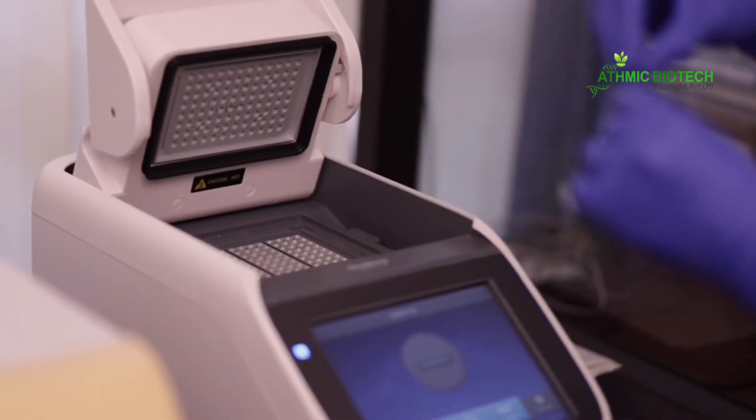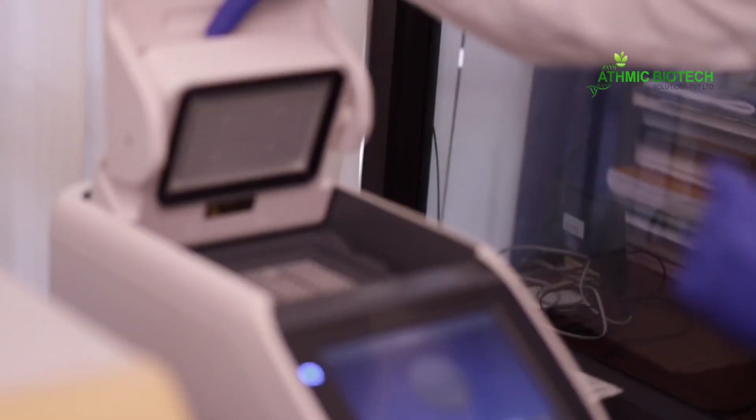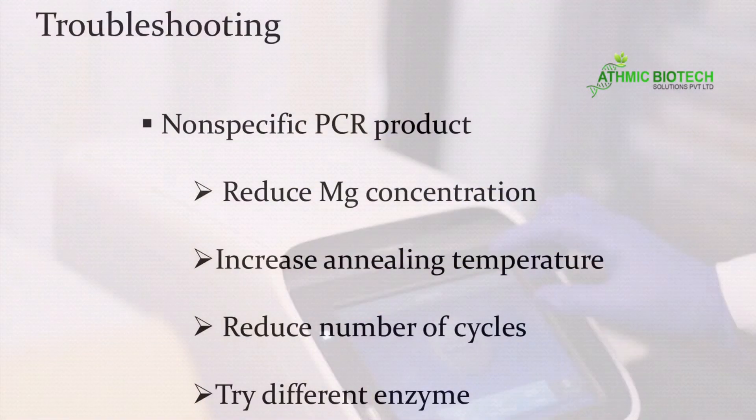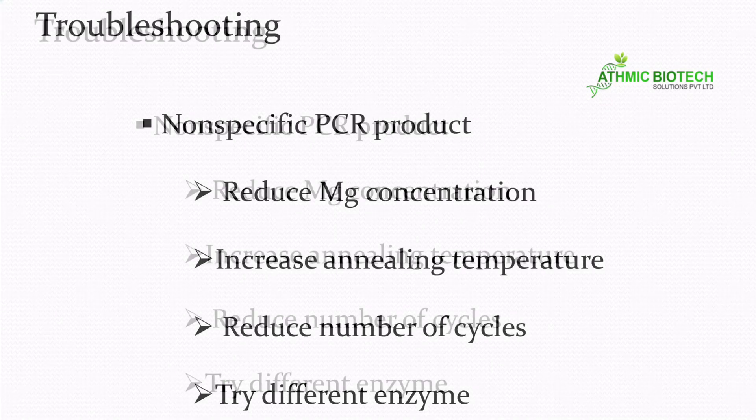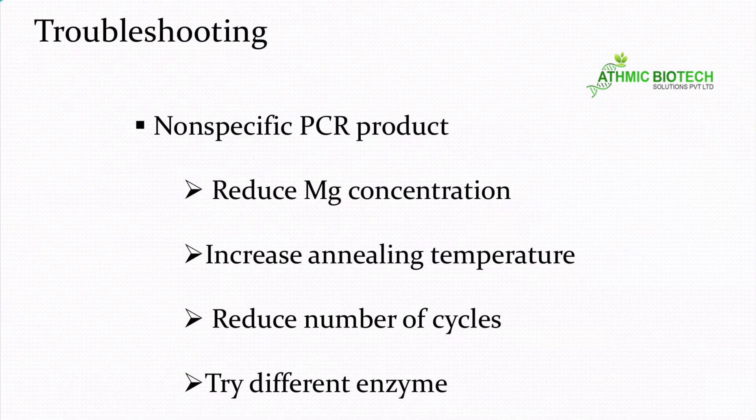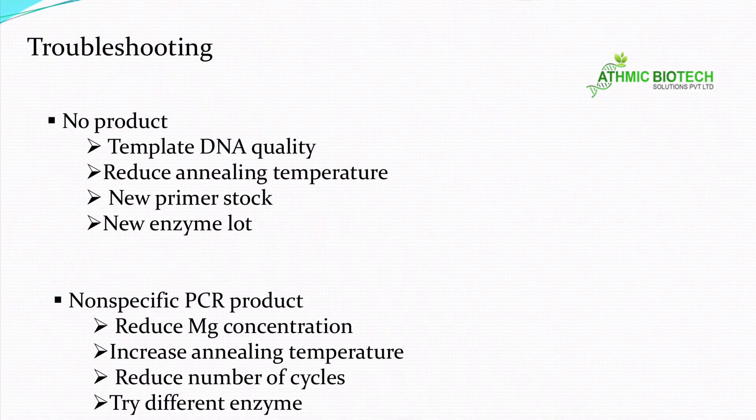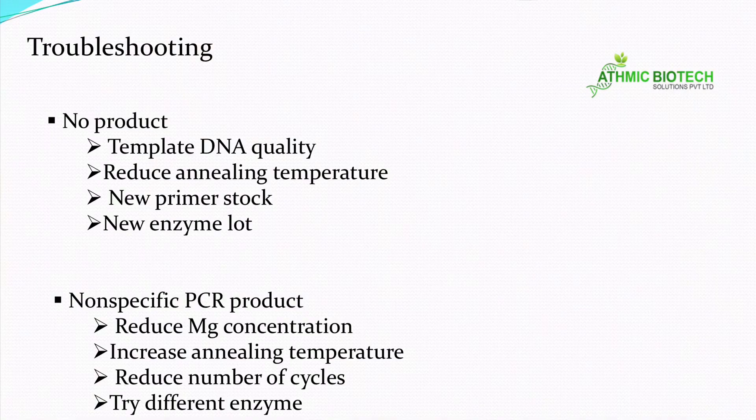Sometimes you are trying to amplify a 1 kb gene from an organism. Instead of 1 kb you got some band around 500 or 750. That is called non-specific PCR product. In such case you have to reduce the magnesium ion concentration and increase the annealing temperature. In the previous case if there is no product you have to reduce the annealing temperature. Here you have to increase if you got a non-specific PCR product. And third, you have to reduce the number of cycles and try with a new enzyme lot.